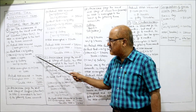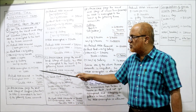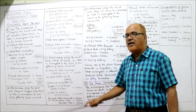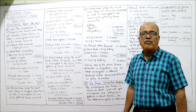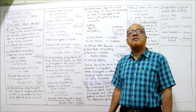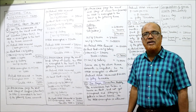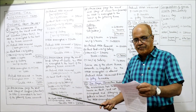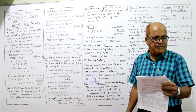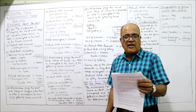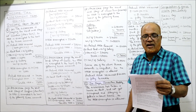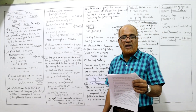Actual HRA received is ₹24,000. Exempted under section 10(13A) is ₹6,000. So taxable HRA = ₹24,000 − ₹6,000 = ₹18,000. Case A completed. Now Case B: Basic pay ₹16,100 per month, DA 18%, HRA 20%, rent paid ₹4,400 per month in Nagpur.